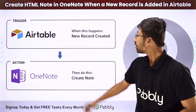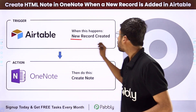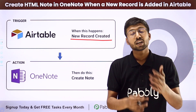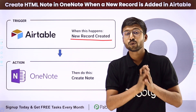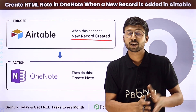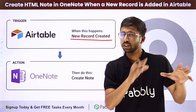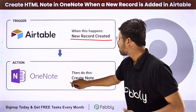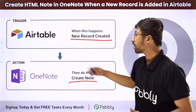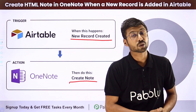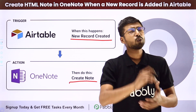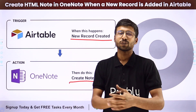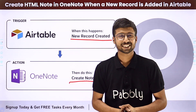Using this automation, whenever a new record or new row is added in AITable, automatically a note will be created in OneNote with the same details. So how can you set up this automation? To know this, you have to come with me to my screen.